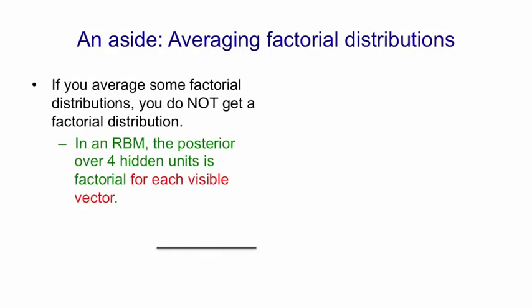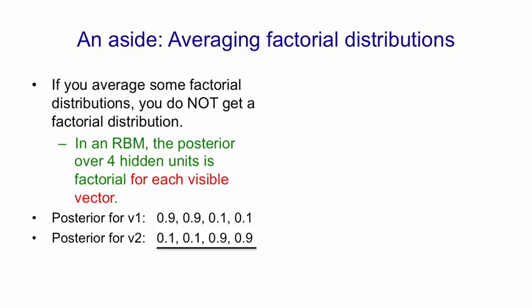Suppose we have an RBM with four hidden units, and suppose we give it a visible vector. Then given this visible vector, the posterior distribution over those four hidden units is factorial. Suppose the distribution is that the first and second units have a probability of 0.9 of turning on, and the last two have a probability of 0.1 of turning on. What it means for this to be factorial is that the probability the first two units will both be on is exactly 0.81. Now suppose we have a different input vector V2, and the posterior distribution over the same four hidden units is 0.1, 0.1, 0.9, 0.9. If we average those two distributions, the mean probability of each hidden unit being on is the average of the means — so the means are 0.5, 0.5, 0.5, 0.5 — but what you get is not a factorial distribution defined by those four probabilities.